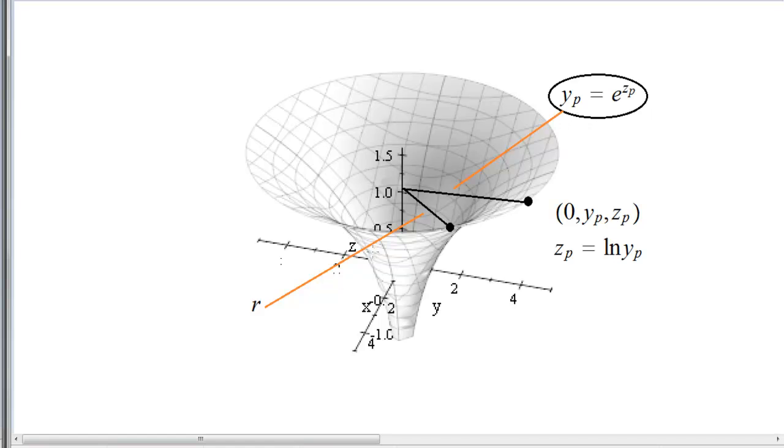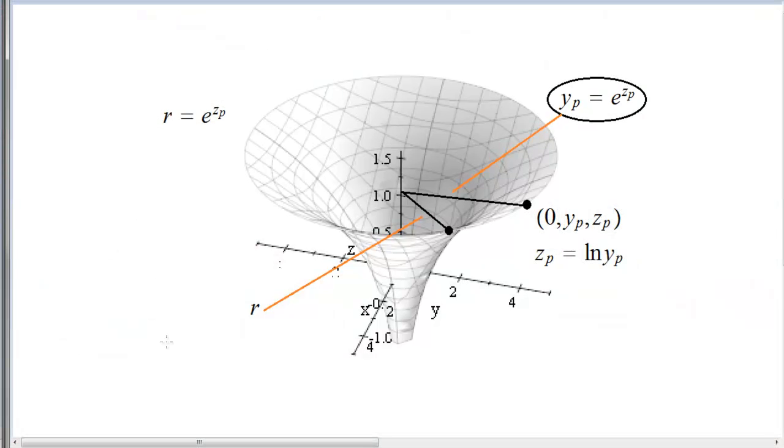So now, this value here is the particular value of y, which equals e to the power zp, and of course, this r will have to be the same. So r has to be e to the zp for this entire circle. r means the radius of the circle that we got in that section.